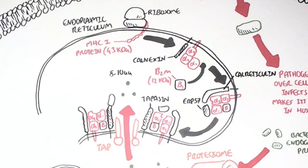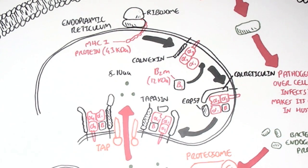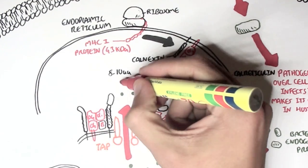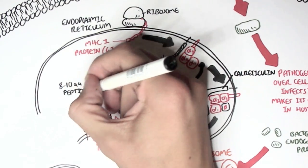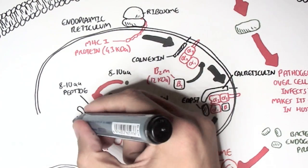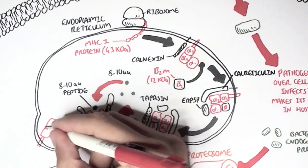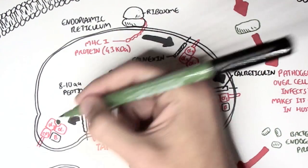However, the MHC class 1 binding site, the cleft, the groove is very unique and only fits to a specific antigen. And this is because it contains a variable region. The alpha 1 and 2 is unique because it's a variable region and binds to specific antigens. But, for example, if an antigen fits nicely into the binding groove, the MHC class 1 together with the peptide, the antigen, can then leave the rough endoplasmic reticulum.